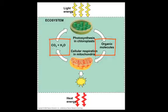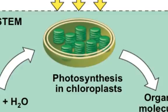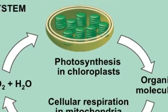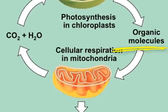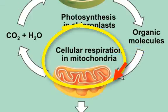Autotrophs — plants, algae, and some bacteria — capture light energy in photosynthesis and power this process. Photosynthesis takes place in the chloroplasts of plants and algae. We'll focus on photosynthesis later. Another process has evolved where those organic polymers can be used as a fuel to power respiration in the mitochondria of all eukaryotic organisms.